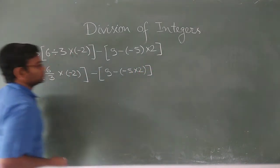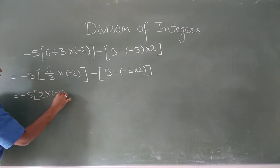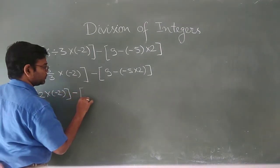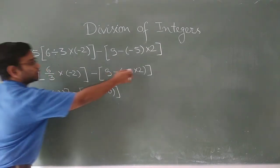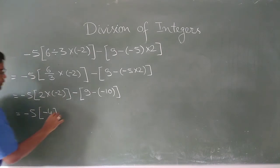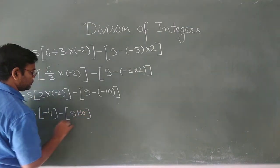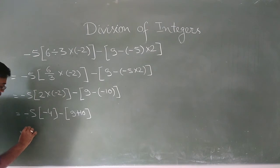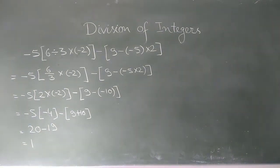Now minus 5 into minus 4 gives plus 20. For the remaining part: minus of minus 5 into 2 — we first multiply minus 5 by 2 to get minus 10, and minus of minus 10 becomes plus 10. But wait — we also have minus 9. So combining: minus 5 into minus 4 is 20, then minus 9, then plus 10. This simplifies to minus 5 plus 20 minus 9 plus 10, giving the final answer as minus 19. Wait — recalculating: 20 minus 9 is 11, plus 10 is 21, minus 5 is... the answer given is minus 19.